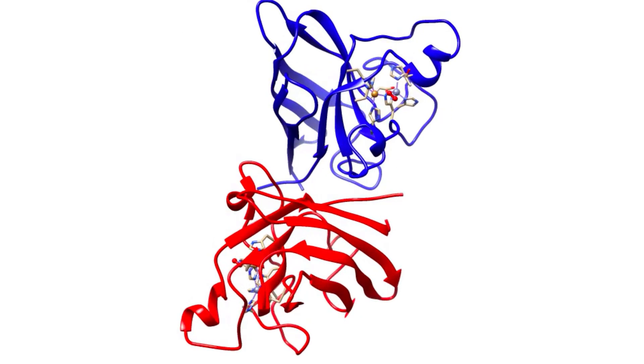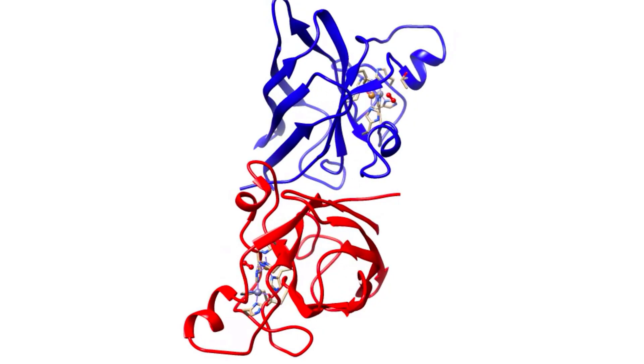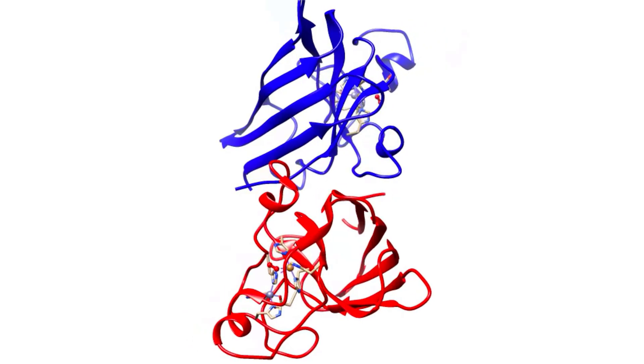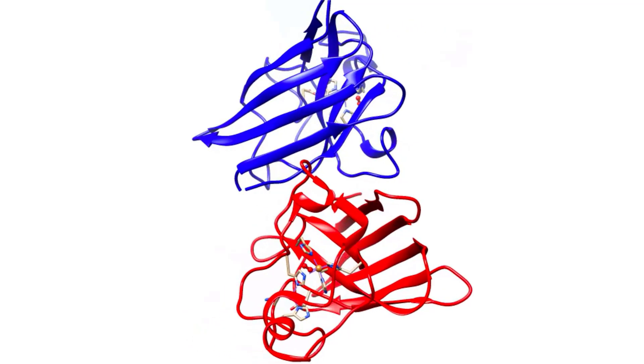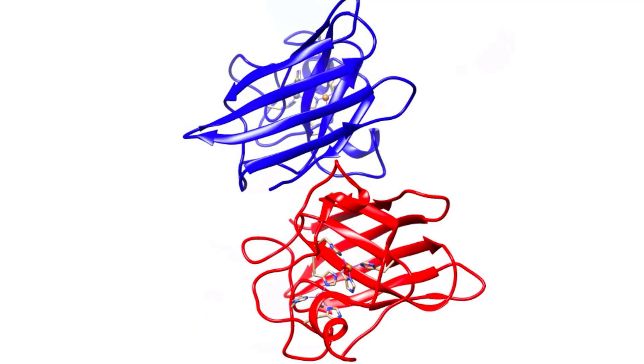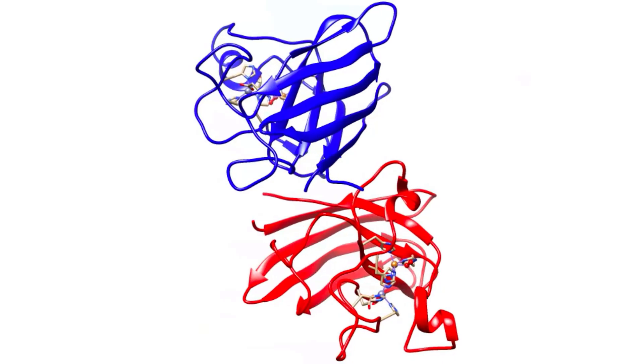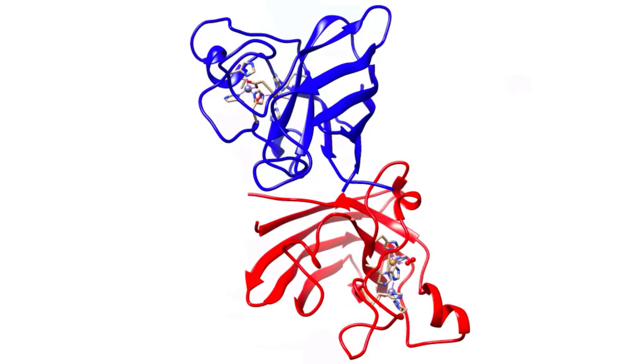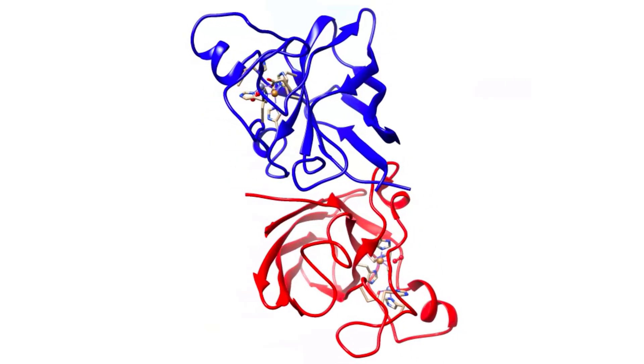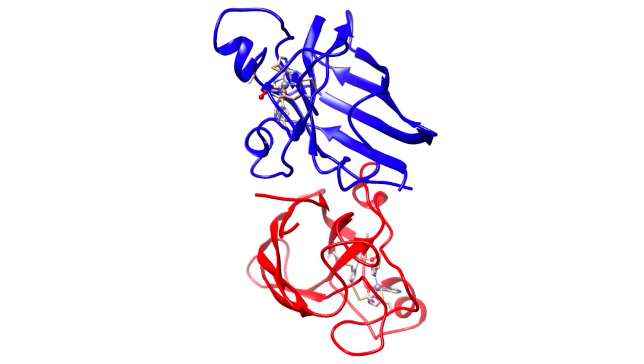The superoxide dismutase protein is a dimer that is composed of two identical subunits. Each subunit is composed of 151 amino acid residues. These amino acid residues are arranged in eight beta sheets and three exterior loops. The two identical subunits are differentiated by red and blue ribbon diagrams shown.